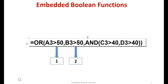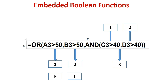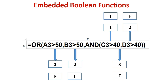Let's dissect the function. The OR function has three arguments; the third argument is an AND function. The first argument evaluates to false, the second argument evaluates to true. The third argument is the AND function, which has two arguments: the first argument evaluates to true and the second argument evaluates to false. In an AND function, if we have one argument that evaluates to false, the entire function will evaluate to false.